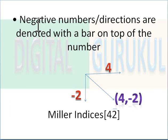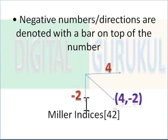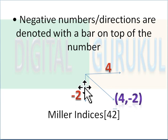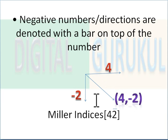Negative numbers or directions are denoted with a bar on top of the number. For example, if the negative direction is minus two on the y-axis and x-axis is four, then in Miller indices it's written as four, two-bar. The bar indicates the negative direction.